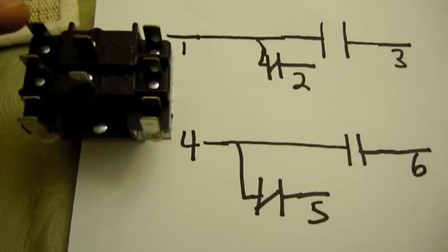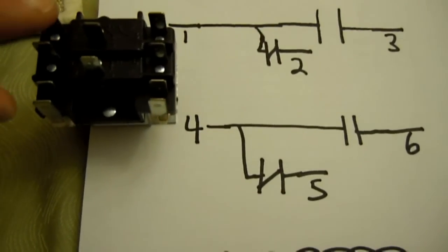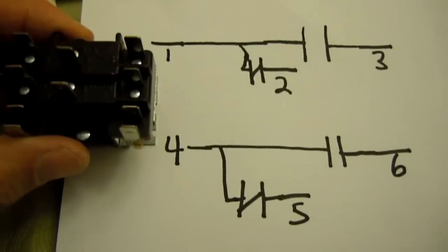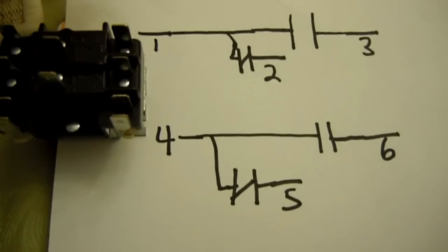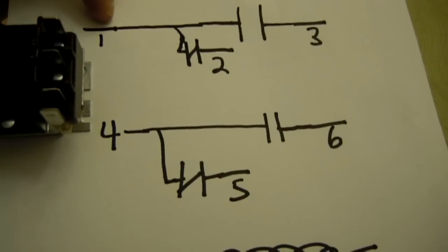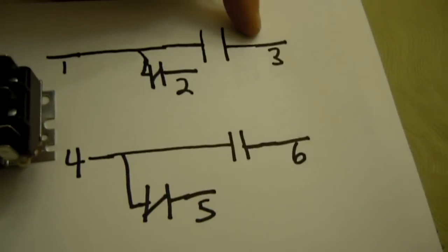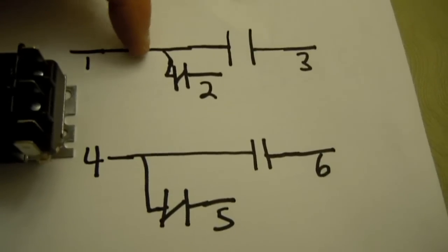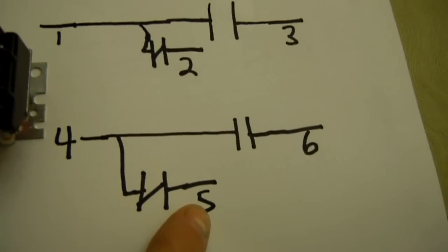Here's your first pole, which is position one as shown here, and your second pole, which is position four. What makes it a double throw is that when this relay is energized, it closes the switch between one and three and four and six, thus making positions two and five then open. Thanks for it.